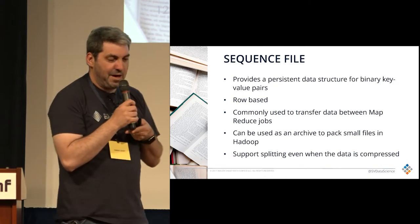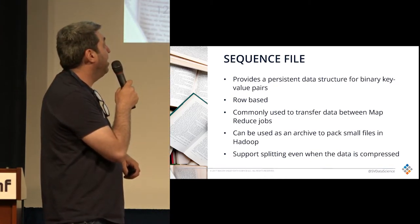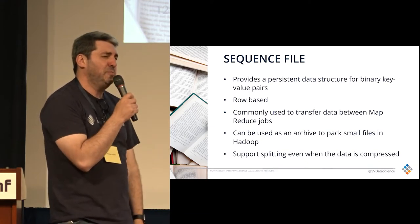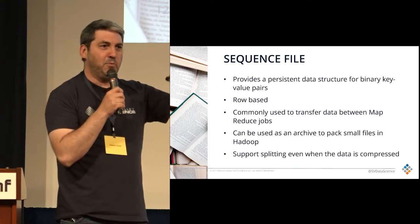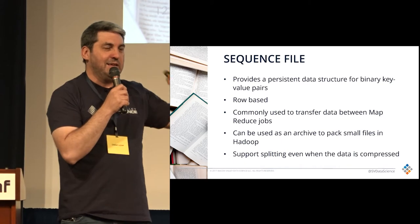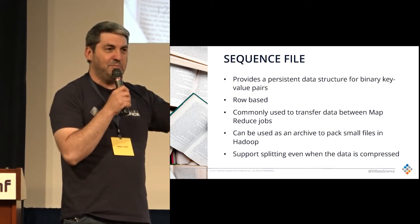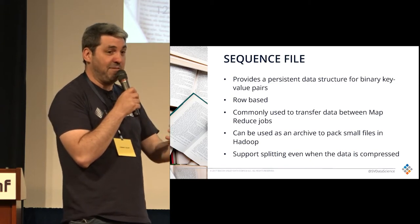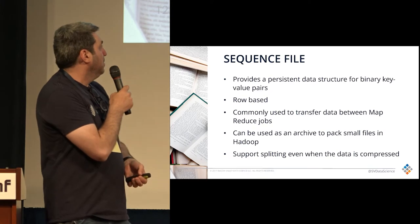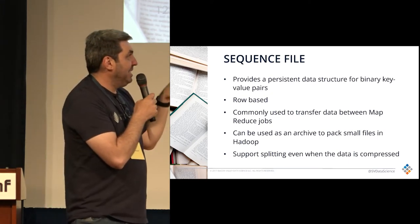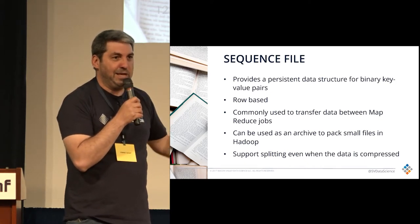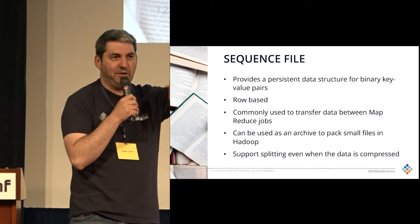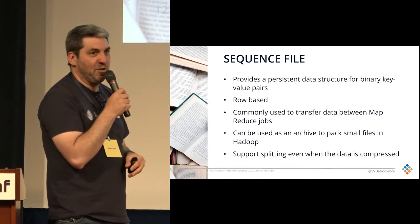Then we had sequence files, which came out at the same time. This is a binary file with key-value pairs — still row-based, haven't hit columnar yet. Commonly used between MapReduce jobs: you may pull in text files initially, but the communication between jobs would be sequence files. It can handle block compression, the files are binary so it's faster, and it supports splitting even when the data is compressed. So a compressed sequence file can be split and sent to the right data nodes to do the query pieces, then assembled back together.